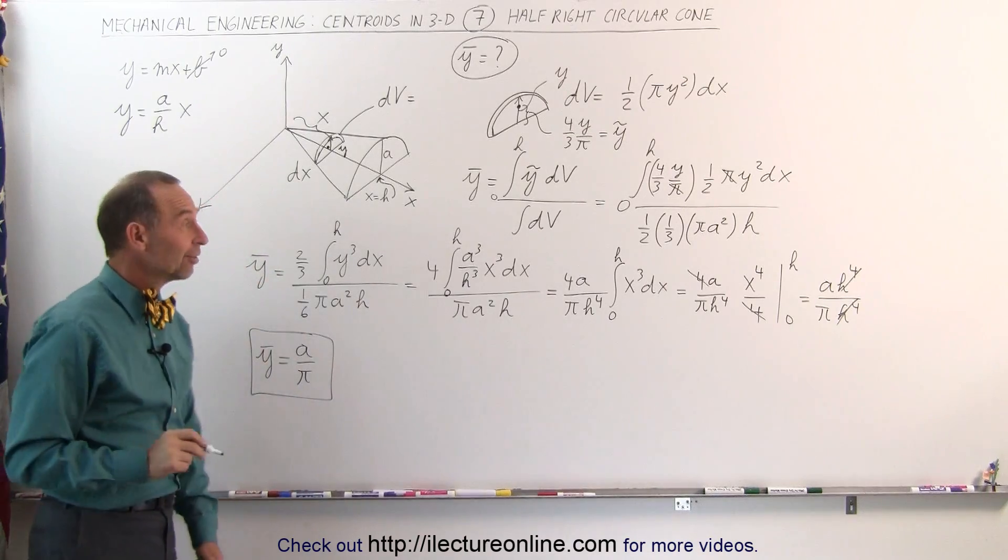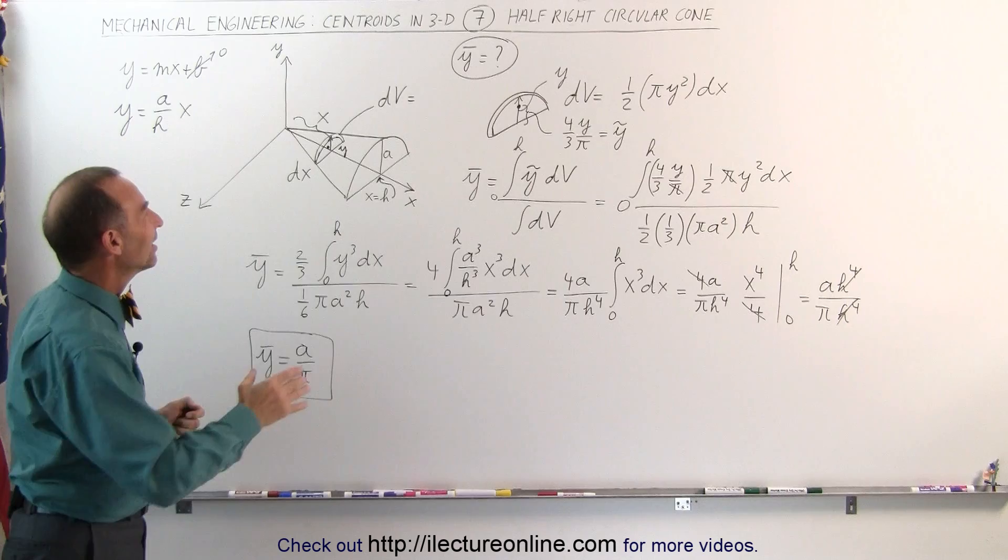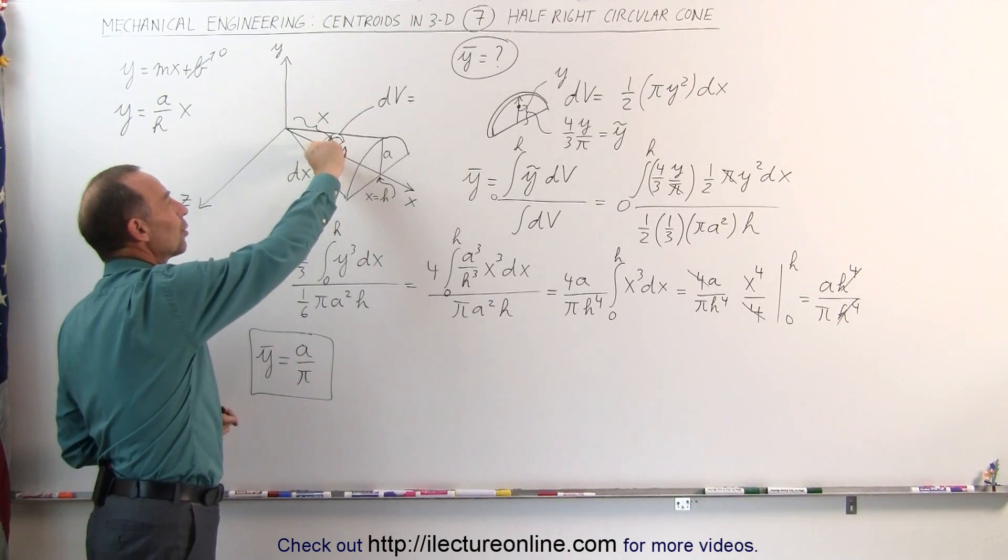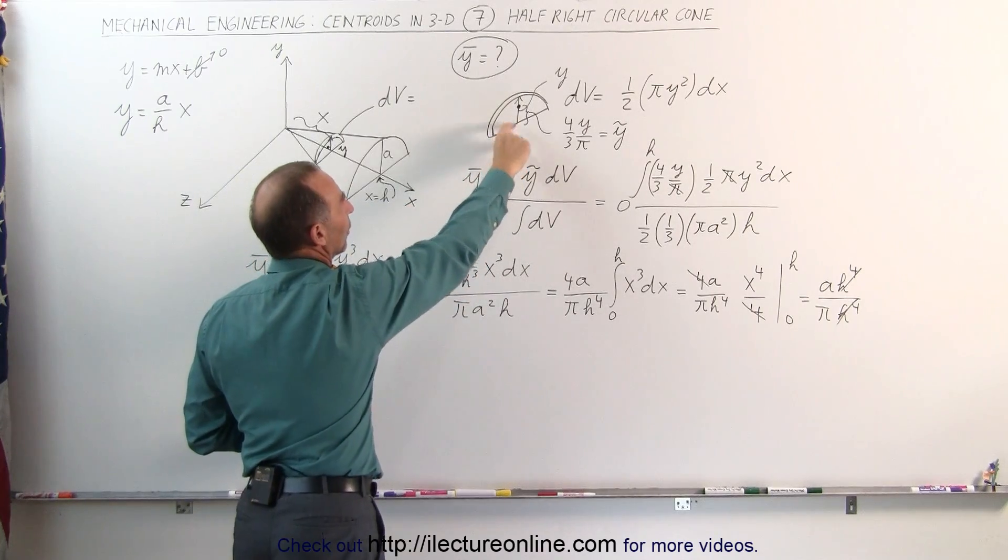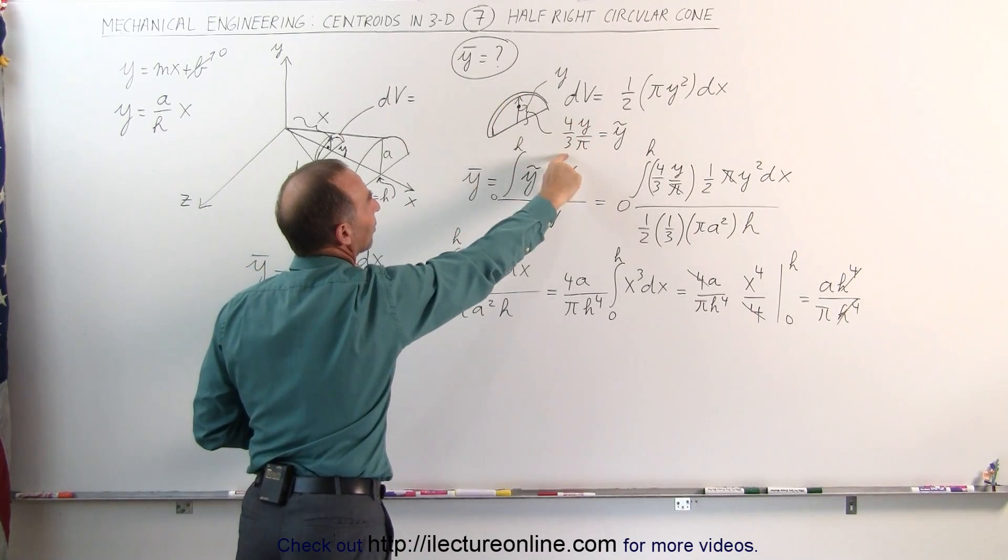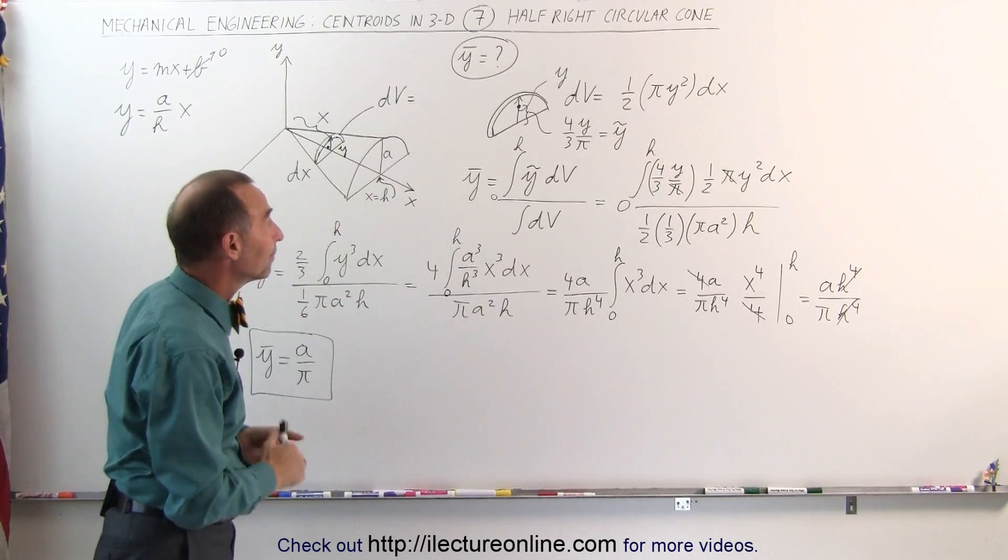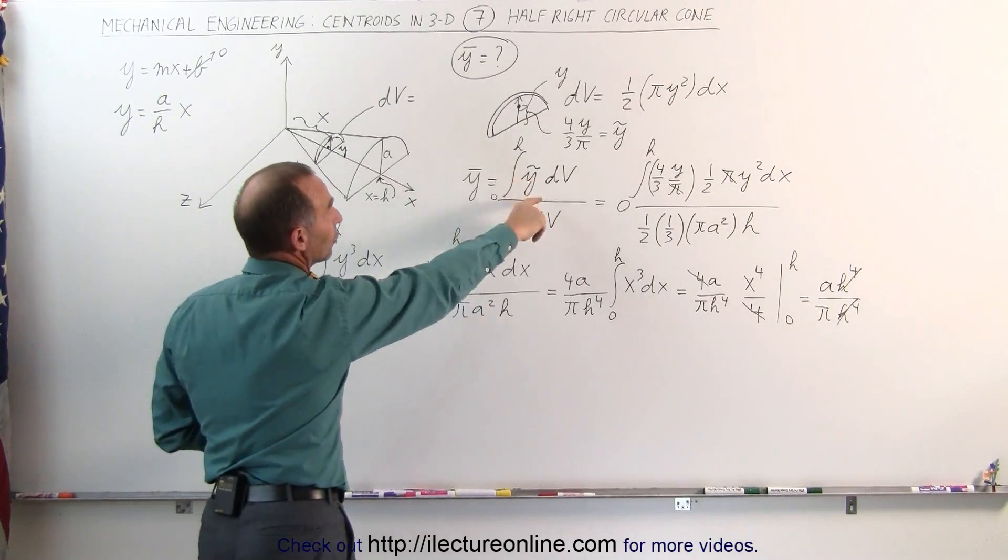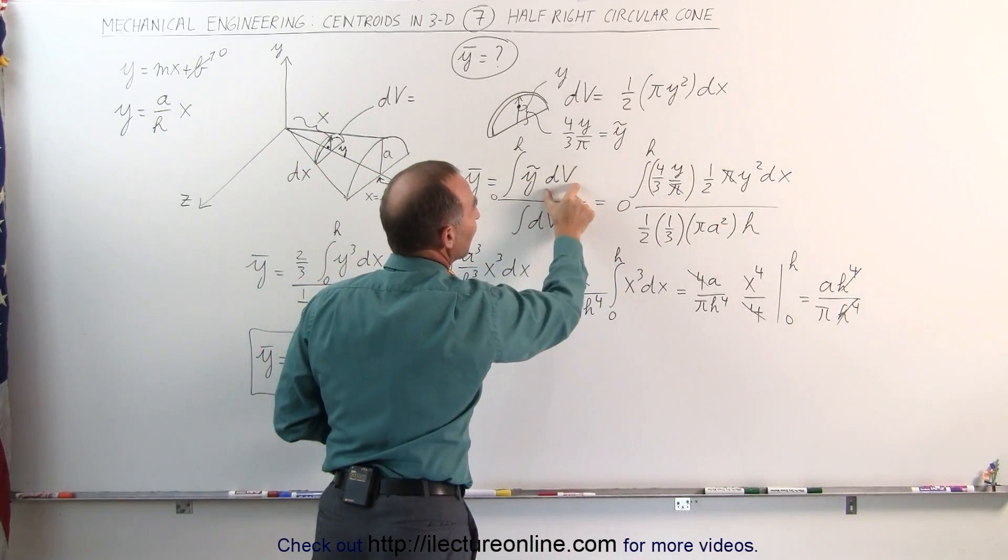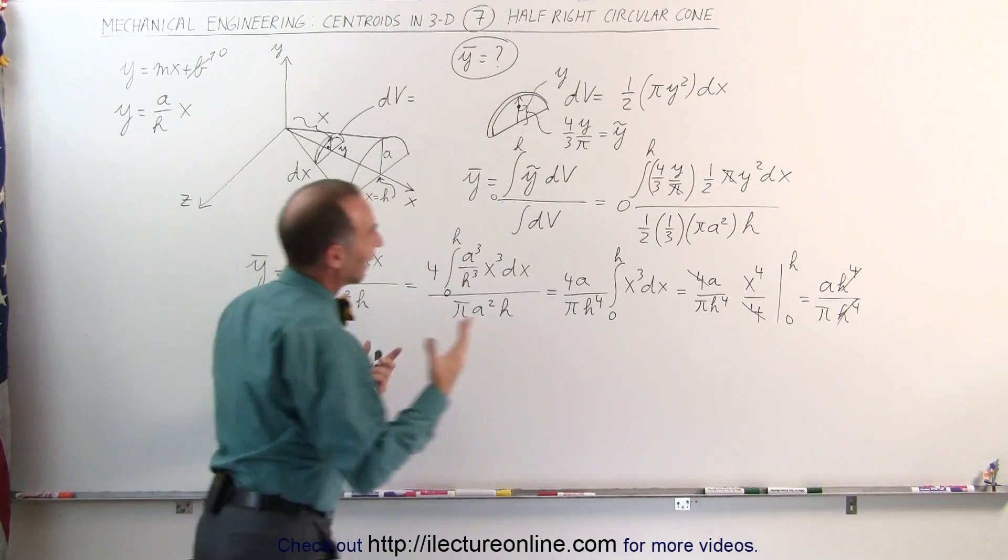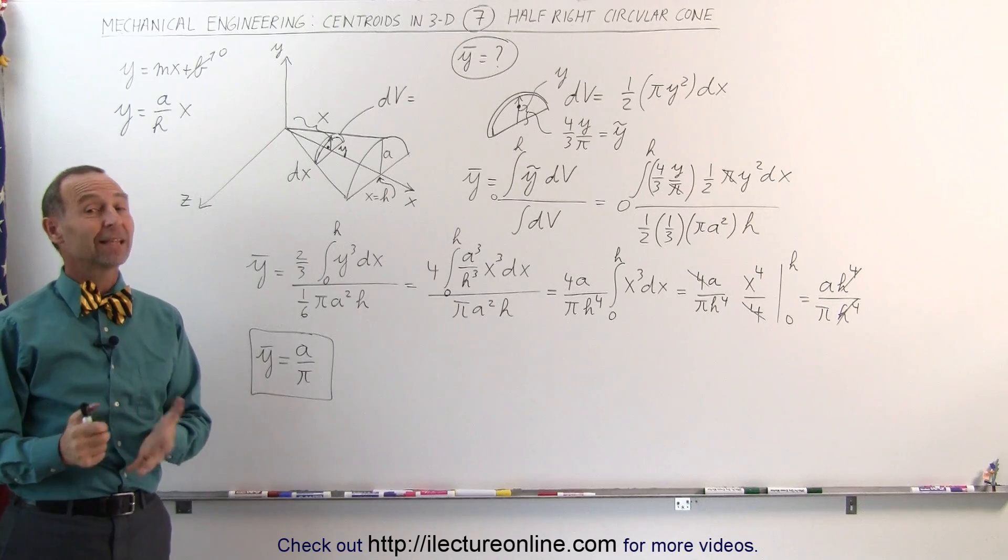And that's a very simple answer to actually a quite complex problem. So you can see that if you just take the centroid of that small little half slice, which is equal to 4y divided by 3 pi. And if you don't remember that, you can go to one of the previous videos where we showed you how to find that. Then you plug that in. All you have to do is plug in the y coordinate of that slice. We multiply it times the dv, which is still the same as before. And then you integrate, and you finally come up with a over pi. And that's how we do that.